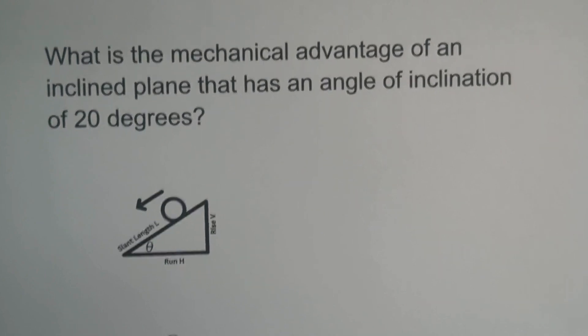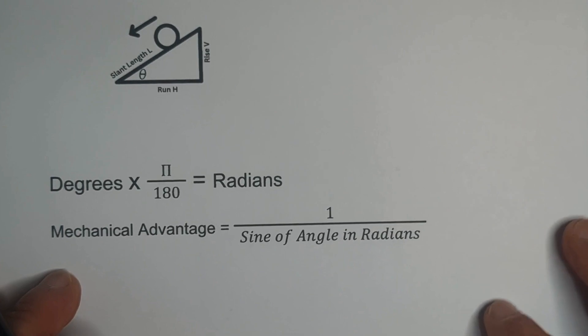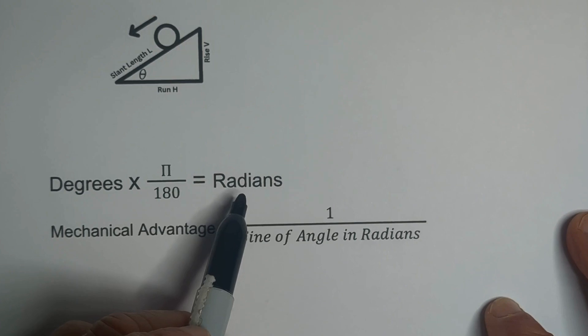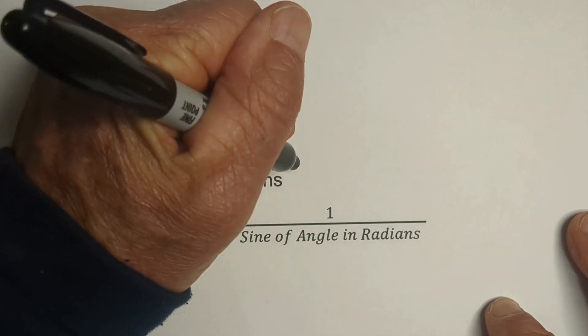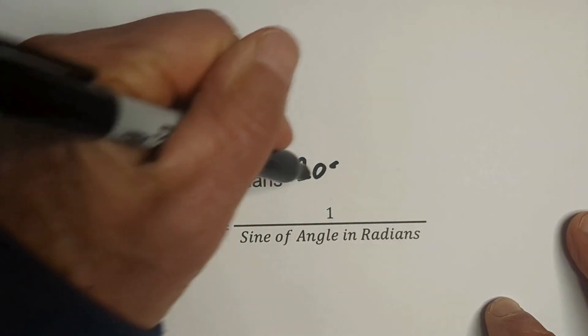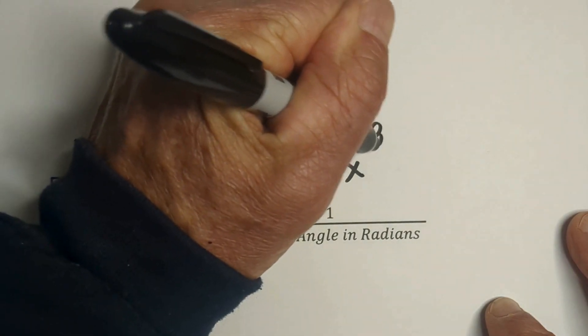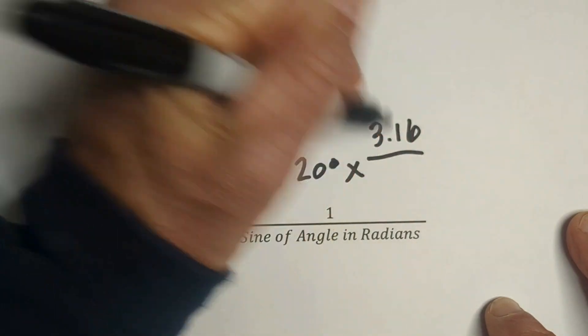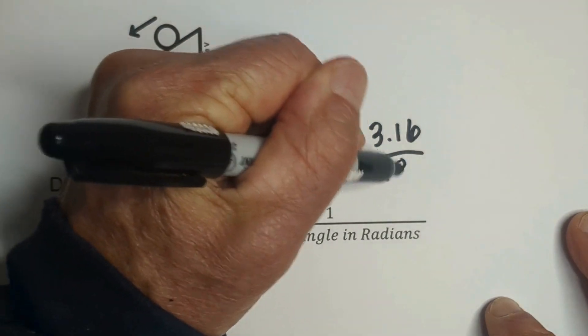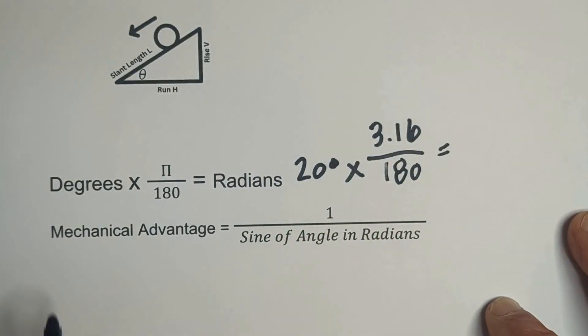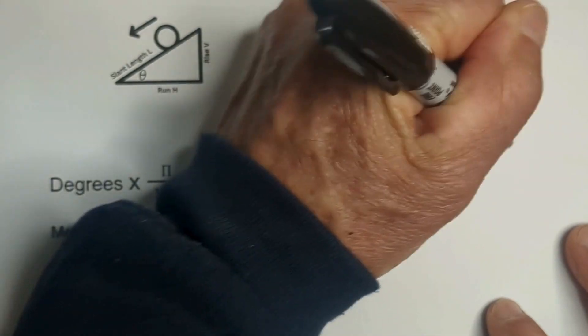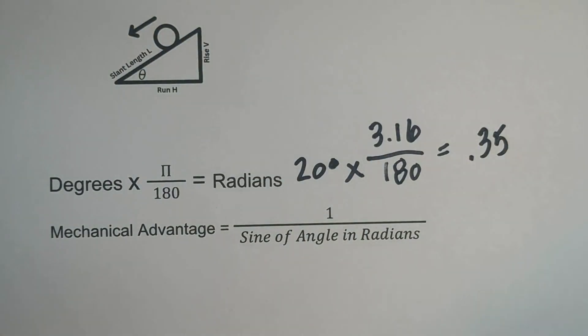The first thing we need to do is convert the degrees to radians. We can do this by multiplying 20 times pi, and I'm going to use 3.16 over 180. When you multiply this out, you get 0.35.